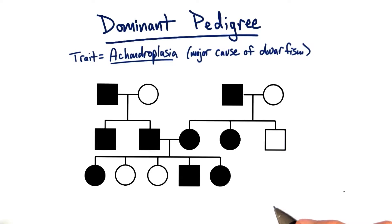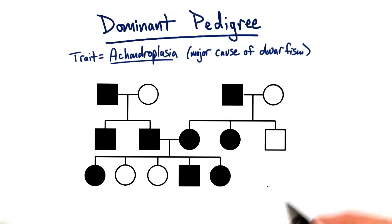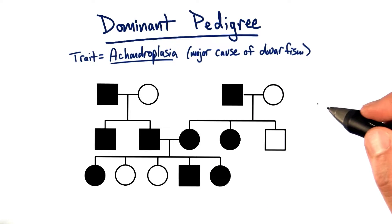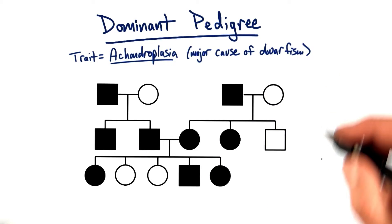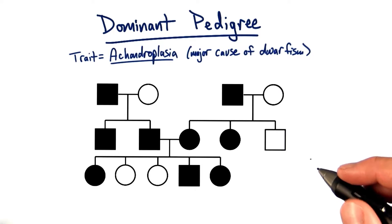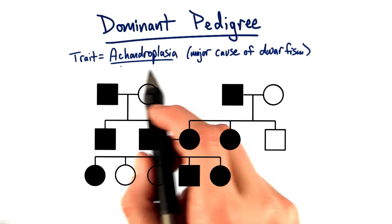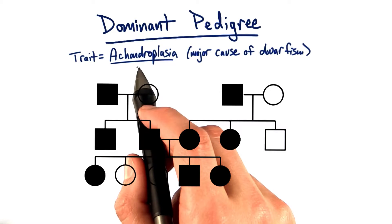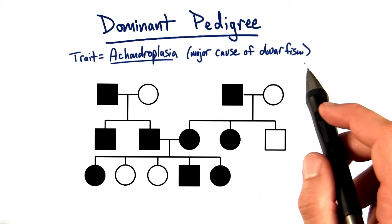Unlike recessive trait pedigrees, dominant traits appear more frequently within a pedigree and often do not skip generations. Here is a great example of a dominant trait called achondroplasia, which is a major cause of dwarfism in humans.